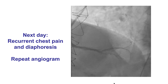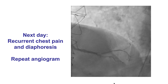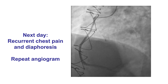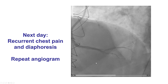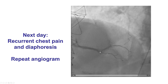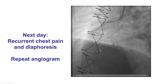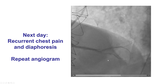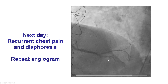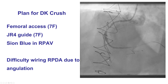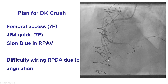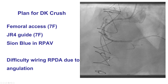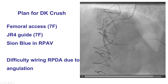Unfortunately, the patient had recurrent chest discomfort the following day and was sent back to the cath lab. Angiography again demonstrated this suspicious area distal and proximal to the saphenous vein graft touchdown. Given the recurrent patient's symptoms, we decided to proceed with PCI of the native coronary artery.